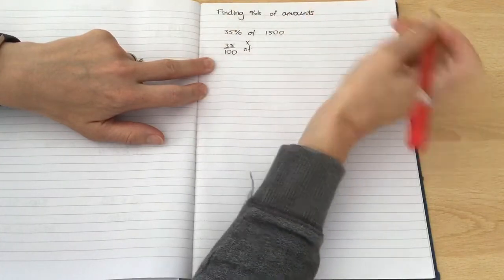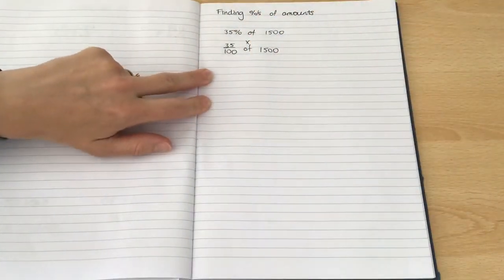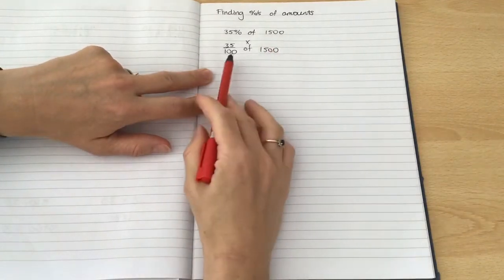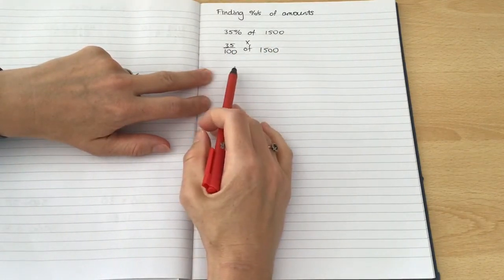Of, which we also know means times, 1500 is the equation we're going to do. So actually what we are going to do now that we've changed it to a fraction is find the fraction of that amount.